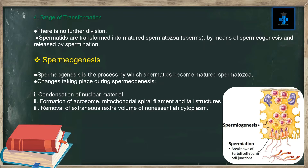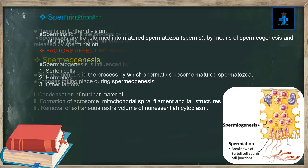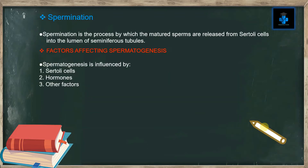Changes taking place during spermiogenesis are: condensation of nuclear material, formation of acrosome, mitochondrial spiral filament and tail structures, and removal of extraneous — that is extra volume of — non-essential cytoplasm.